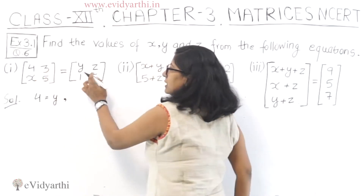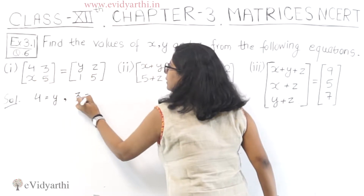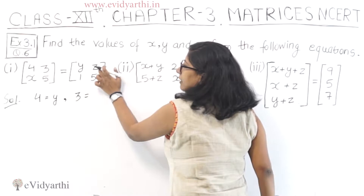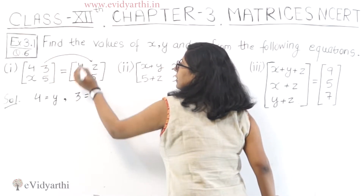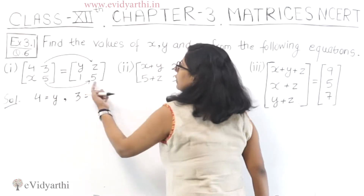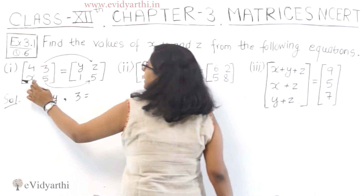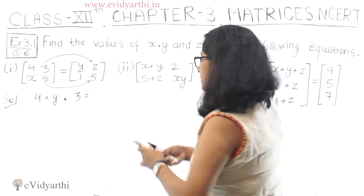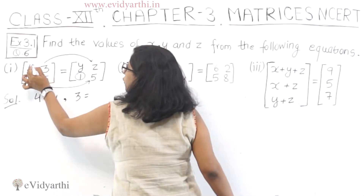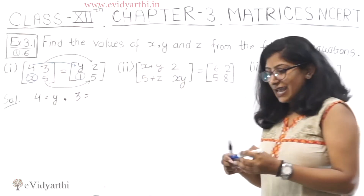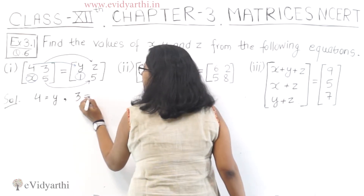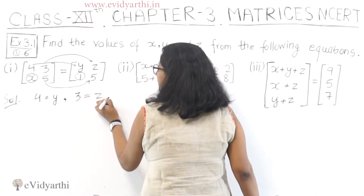Then 3 is equal to z, because this is 1st row, 2nd column — here also 1st row, 2nd column — these are corresponding entries. This is 5 by 5, so if there are 5 and 7 then the question is wrong. Here is x, this is 1 — this is corresponding — this is 4, this is y — corresponding. Like this, around this z — we write x equals 1.